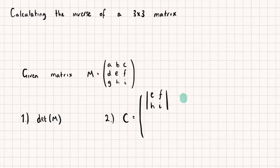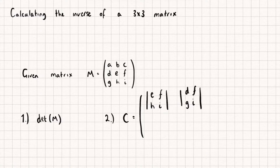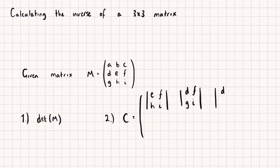Then we move on to the second element on the first row of our cofactor matrix. To find that, I remove the rows and columns of the second element in the first row of matrix M, and we're left with four elements. We find the determinant of D, F, G, and I. And finally for the first row, for this final element, I remove the rows and columns of element C, and we're left with a 2x2 matrix. We find the determinant of D, E, G, and H.